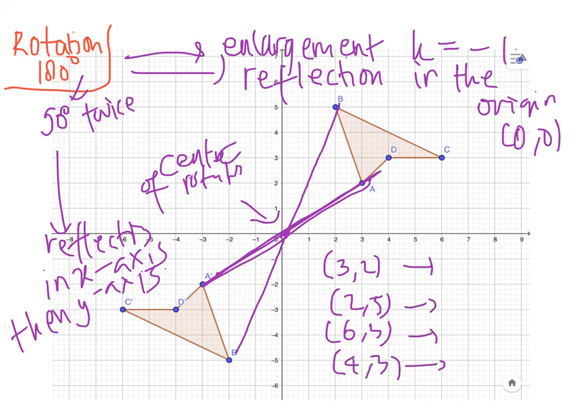And this becomes, let me change the color. 3, 2 becomes negative 3, negative 2. This is negative 2, negative 5, minus 6, minus 3. And then negative 4, negative 3.